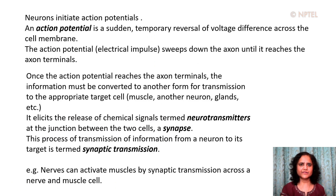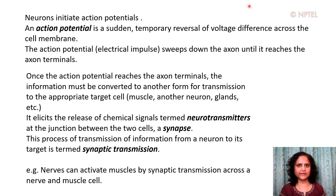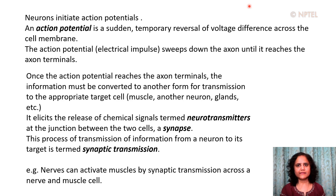Neurons initiate action potentials. An action potential is a sudden temporary reversal of voltage difference across the cell membrane. This electrical impulse sweeps down the axon until it reaches the axon terminals. When the action potential reaches the axon terminals, the information must be converted to another form for transmission to the appropriate target cell, which could be a muscle cell, another neuron, or glands in the body.